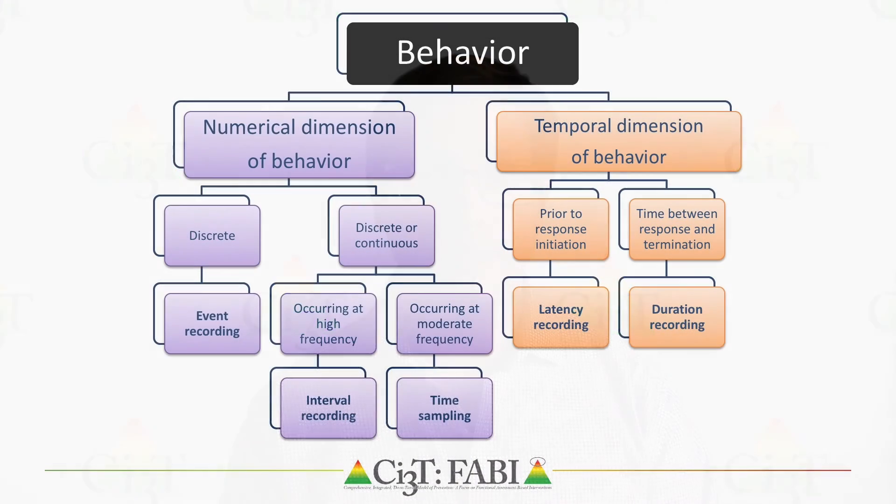Once the behavior dimension has been identified, it is important to select a measurement system that is well aligned to its dimension. To begin this selection process, you must first ask yourself: does the performance of the behavior take about the same length of time each time? If so, the behavior is uniform. Examples of uniform behaviors include talking out of turn, cussing, and swearing. Non-uniform behaviors, on the other hand, vary in length each time — examples include being off task or wandering around the room. Measurement systems are derived between two groups: event-based and time-based.